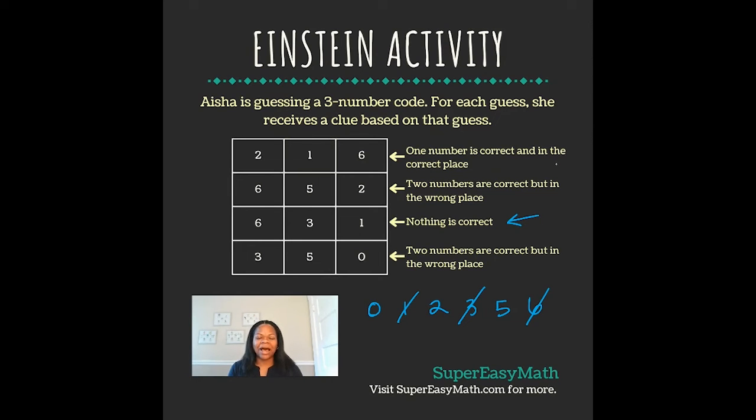Let's start back at the top and consider the clues again. The first clue says one number is correct and in the correct place. Well, we know six is not one of the numbers, so that means we're not talking about the third digit place number in our code. We also know that one is not a part of our code, so it has to be the two.